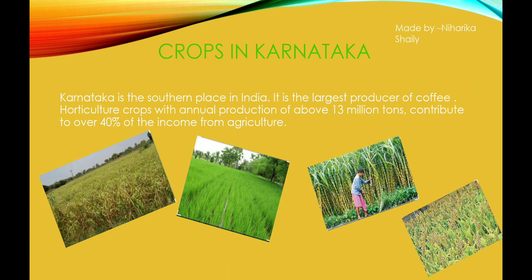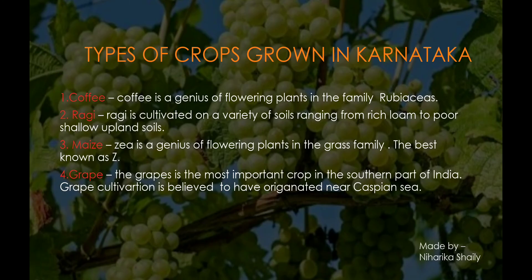Crops of Karnataka: Karnataka is the largest producer of coffee, with horticulture crops contributing over 40% of agricultural income — producing above 13 million tons annually. Key crops include: coffee, a genus of flowering plants in the family Rubiaceae; ragi, cultivated on a variety of soils from rich loam to poor shallow upland soils; maize, a flowering plant in the grass family; and grapes, which are the most important crop in southern India, with cultivation believed to have originated near the Caspian Sea.